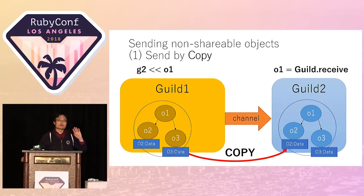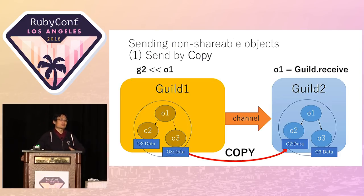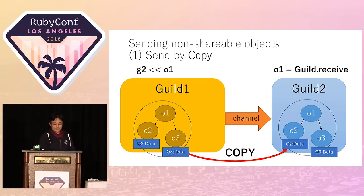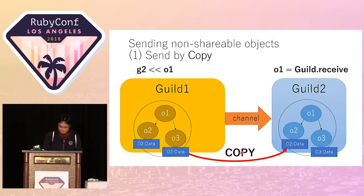We can't share non-shareable objects, so if we want to send a non-shareable object, we need to do something. The copy method is easy to understand — if you copy object O1, then O1 and its child objects are all copied to guild two. The point is we need to copy everything that O1 can traverse.